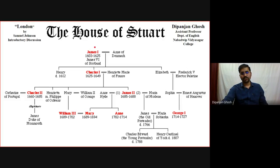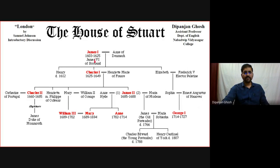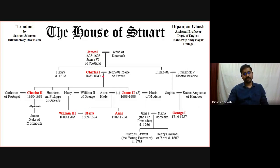The reign of James the First is generally considered as the Jacobean period. He was James the Sixth of Scotland, and the time period was from 1603 to 1625. So from that time the Stuart dynasty came into existence. James the First ruled England from 1603 to 1625, then Charles the First ruled from 1625 to 1649. After 1649 to 1660, this is the time considered as the age of Milton, or the Commonwealth period, ruled by the republicans.